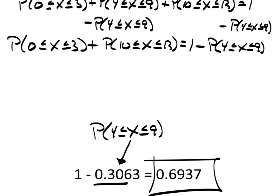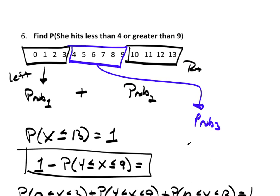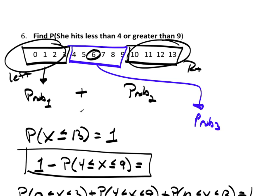In all of these examples I've worked through pretty much every type of binomial probability question: a left tail, a right tail, an individual value like exactly 6, and a middle range. Any other question you could possibly face will be some type of combination of those.